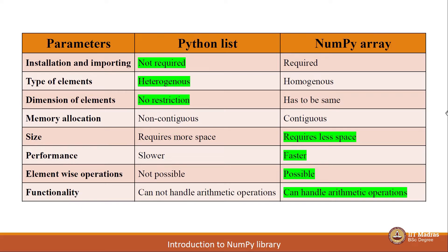So these are the differences between Python lists and NumPy arrays. Most of these differences are self-explanatory, whereas a few require some additional explanation because of technical complexity involved. Let us go through these differences one by one.